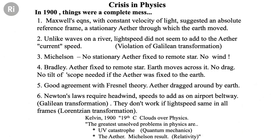Here's a summary of what we've said so far. Maxwell's equations suggested an absolute reference frame. Maxwell's equations gave a speed of light — it didn't depend on the speed of the source. If you have a car coming towards you at night, shining its headlights at you, you would expect that if the car sped up, the light would speed up. It doesn't. No matter how fast the car is going, the light coming at you always comes at you at the same speed. There's no headwind. Unlike waves on a river, light speed did not seem to add to the ether current speed.